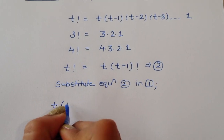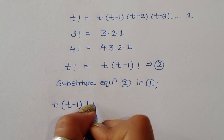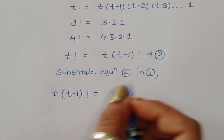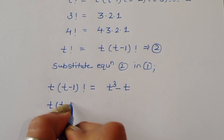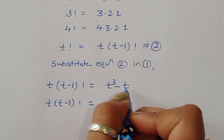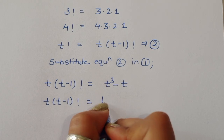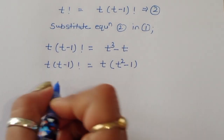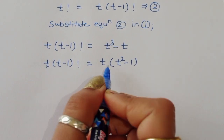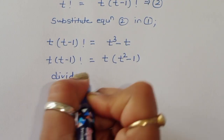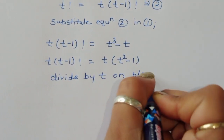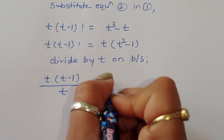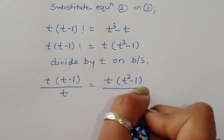Substituting, we get: t times (t minus 1) factorial is equal to t cubed minus t. On the right-hand side, we can take t as common, giving t times (t squared minus 1). We then divide both sides by t.